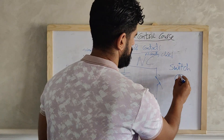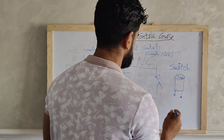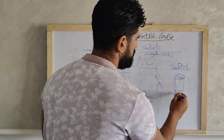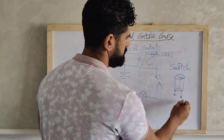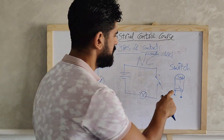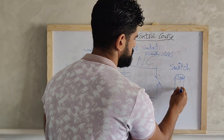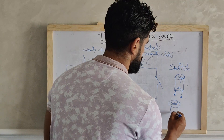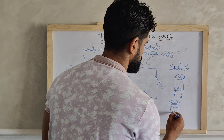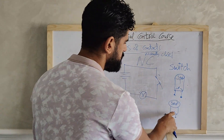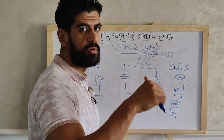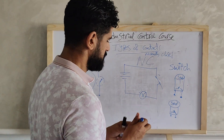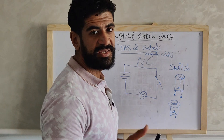A start switch is a normally open switch — when we press it, it will be closed, and when we press it again it will be open. A stop switch is normally closed — when we press the stop it will open, and when we press again it will return to being normally closed. So one type of action device is a switch.